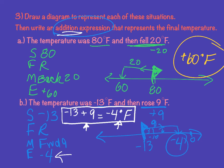Let's go back and write the addition expression for the previous problem too. I'm starting at 80, adding negative 20, and that equals 60 degrees Fahrenheit.